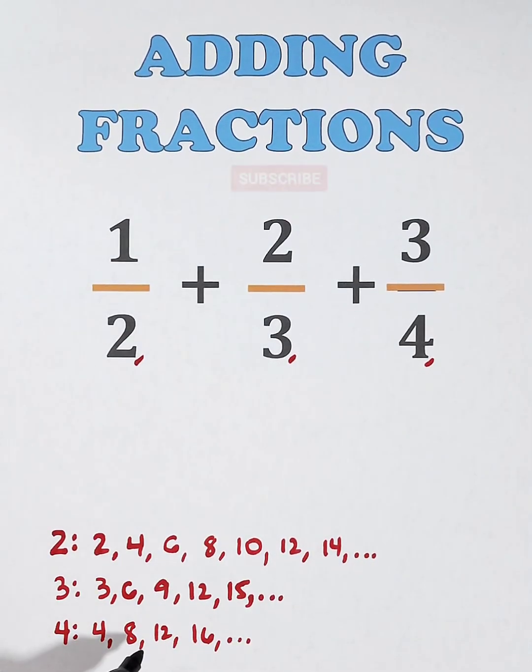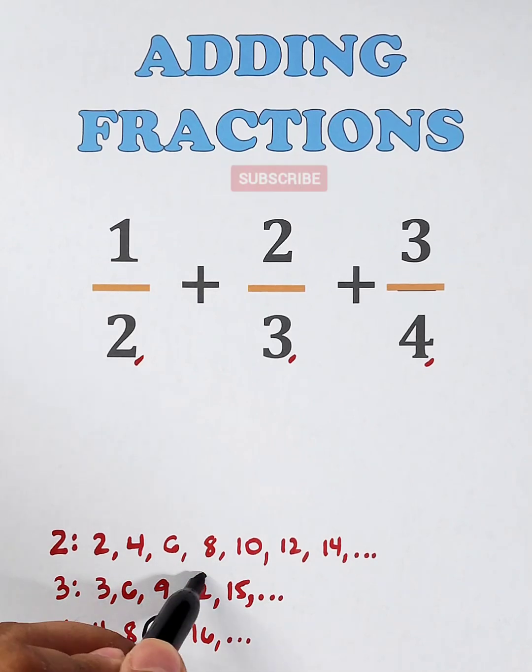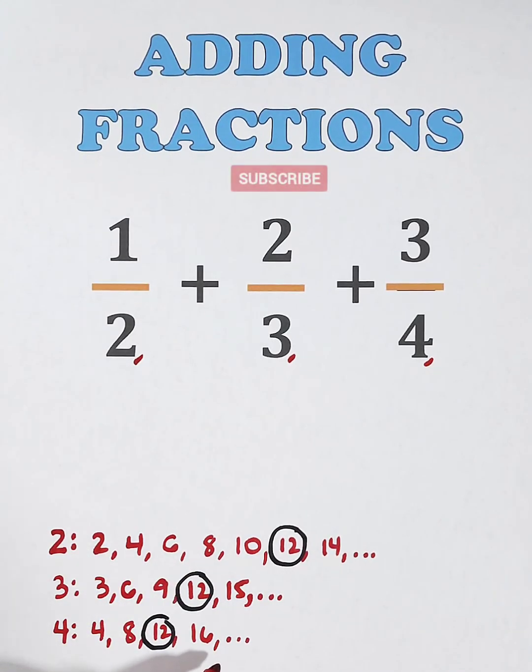Now, let's identify their least common multiple. And as you can see, their least common multiple is 12. Now, this 12 will serve as the LCD of the given fractions.